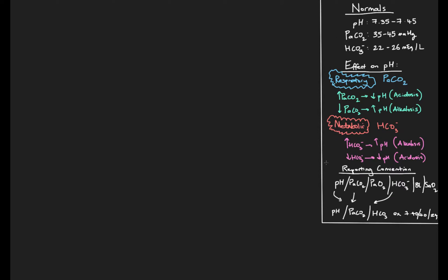I've drawn out a cheat sheet of normal values. The normal values for pH are 7.35 to 7.45, for CO2 it's 35 to 45 millimeters of mercury, and for bicarb it's 22 to 26. From the respiratory component - our pCO2 - increasing pCO2 leads to decreasing pH and acidosis; decreasing pCO2 leads to increasing pH and alkalosis. From the metabolic side, increasing bicarbonate increases pH (alkalosis), and decreasing bicarbonate decreases pH (acidosis).